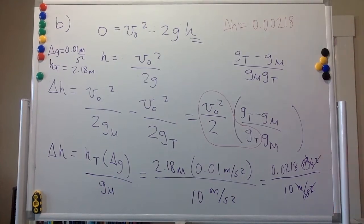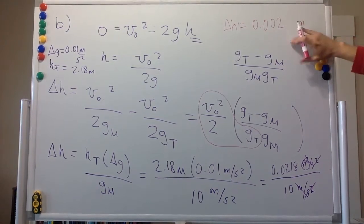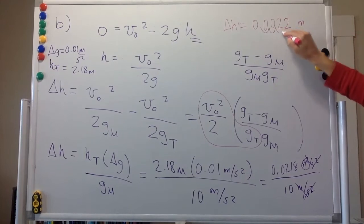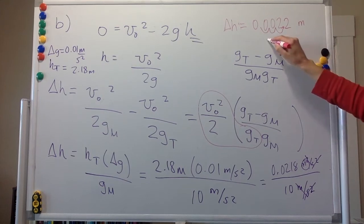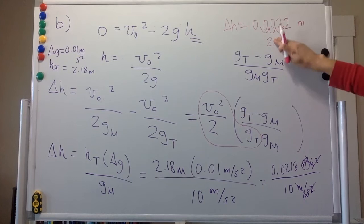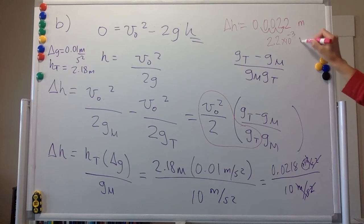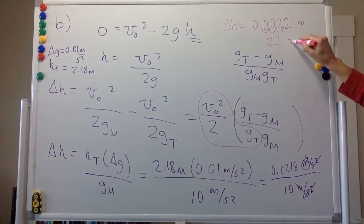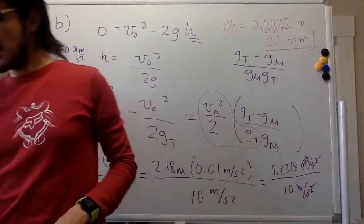This gives us 0.0218 meters, which we can express as approximately 2.2 times 10 to the negative three meters, and that equals 2.2 millimeters. So the difference in the height you'd expect between Tokyo and Mexico City is 2.2 millimeters.